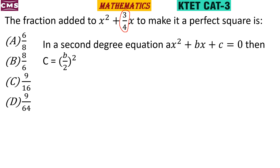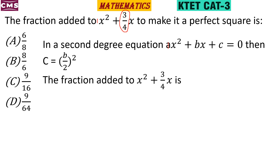In square completion, we take (b/2)² and add it. Here x² is the a=1 term. We take b/2, square it, and that gives us the value to add. The coefficient b is 3/4. We take b/2, which is (3/4) divided by 2, and we multiply reciprocally as a fraction.